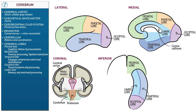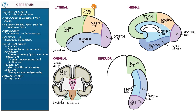Now let's address fissures and sulci. Invaginations exist along the brain as deep fissures, which alter the contour of the cerebral ventricles, and shallow sulci, which merely indent the outer surface of the brain. In the lateral hemisphere diagram, label two key invaginations: the Sylvian fissure, also known as the lateral sulcus, and the central sulcus, which extends from the apex of the brain to the Sylvian fissure.